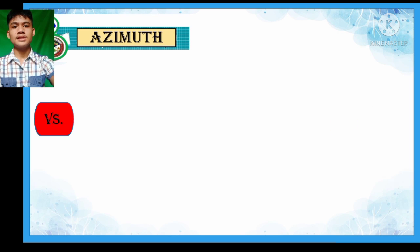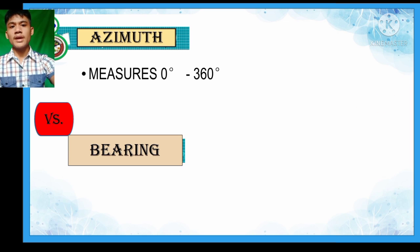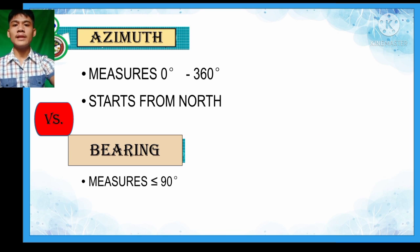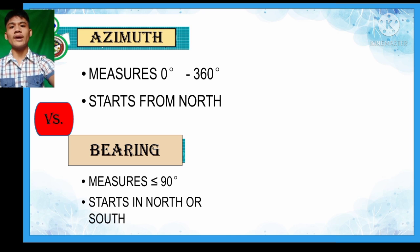This would be the comparison for us to distinguish azimuth from the other related concept, which is bearing. Azimuth measures 0 degrees to 360 degrees, and the reference line is the north. Azimuth is measured only in a clockwise manner. While bearing measures less than or equal to 90 degrees, and it starts from north or south — so we have two reference directions: north for the upper and south for the lower — and it can be measured both clockwise and counterclockwise.